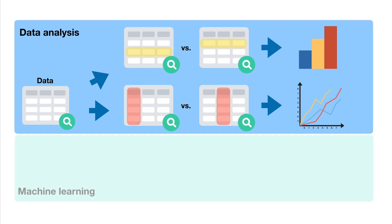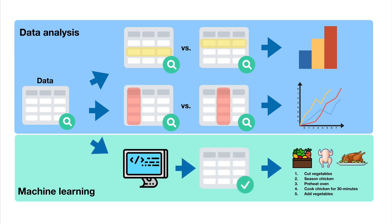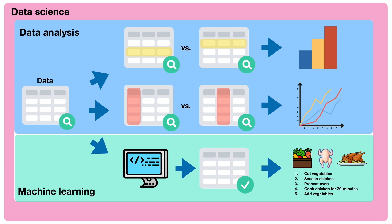Data science is running experiments on a set of data with the hopes of finding actionable insights within it. One of these experiments may be to build a machine learning model. This model might look at 10,000 different sets of ingredients and 10,000 different chicken dishes, then tell us, based on a set of new ingredients that we have, which chicken dish these ingredients are most likely to make. You can consider data analysis and machine learning as a part of data science. Don't worry if all of this seems unclear for now — by the end of this course, you'll have had plenty of hands-on experience with all of these.